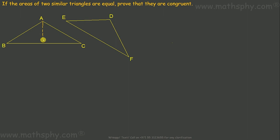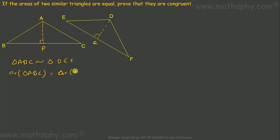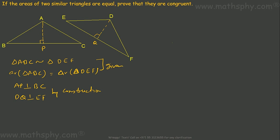To do that, let's draw a perpendicular from A to BC, calling it AP, and from D to EF, calling it DQ. This is by construction. We are given that triangle ABC is similar to triangle DEF, and that the area of triangle ABC equals the area of triangle DEF.